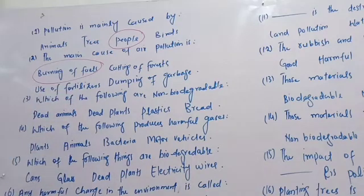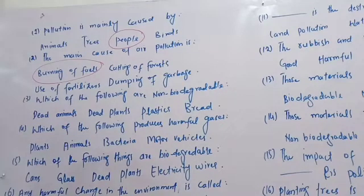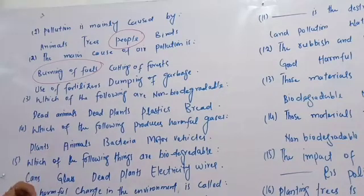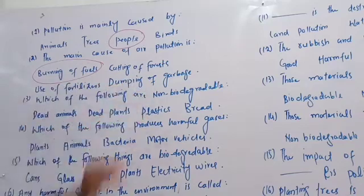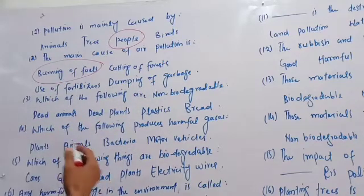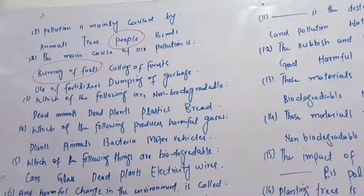Which of the following are non-biodegradable? Non-biodegradable is the material that cannot be degraded by nature. Dead animals and dead plants are biodegradable. Plastics and bread — we need to decompose them. Bacteria and fungi can decompose biodegradable materials.